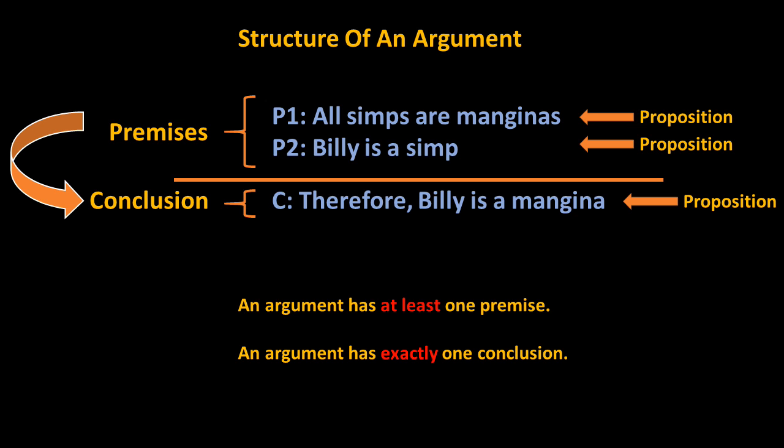Consider the following example of an argument. Proposition 1: All simps are manginas. Proposition 2: Billy is a simp. Therefore, Billy is a mangina. The conclusion is sometimes separated off from the premises with a horizontal line. An argument must have at least one premise, though it can have many premises. However, an argument has exactly one conclusion. That an argument has only one conclusion is a matter of convention — logicians have agreed that there is a one-to-one correspondence between arguments and conclusions.